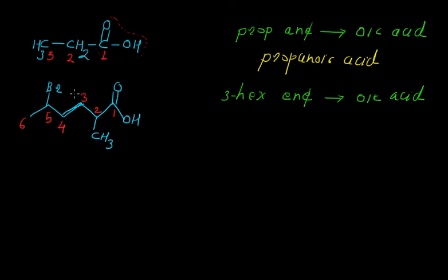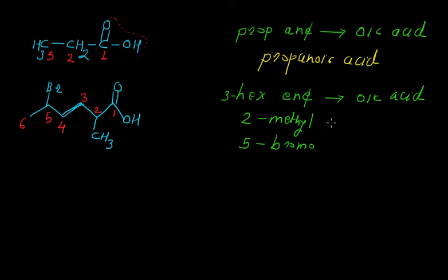In this compound we have 2 substituents. At position number 2, a methyl group is present, and at position number 5, bromine is present — so '5-bromo'. We must consider all these substituents when writing the final IUPAC name.